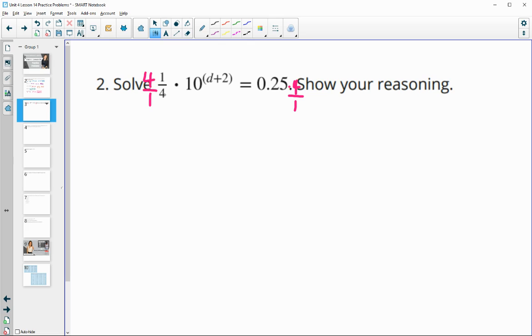So 4 times 1 fourth gives us 1, so we get 10 to the d plus 2 equals 0.25 times 4, which is 1. And we know we can write 1 as a power of 10 because that's just 10 to the 0 power.